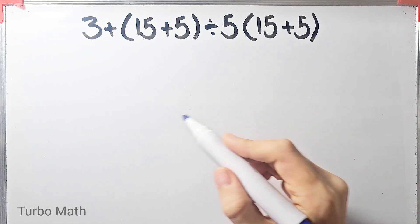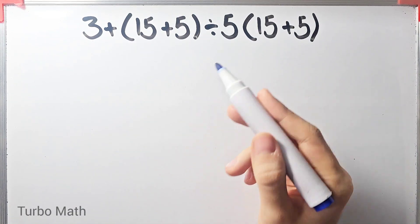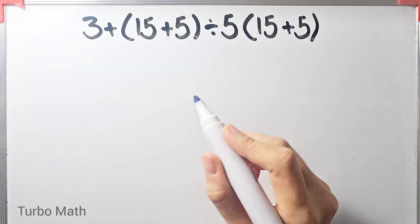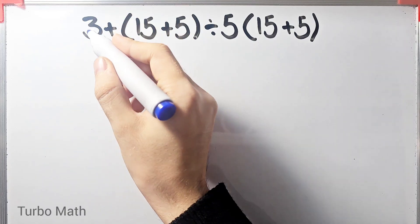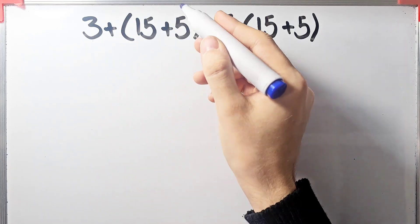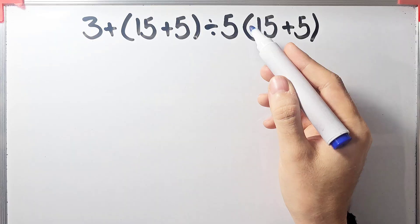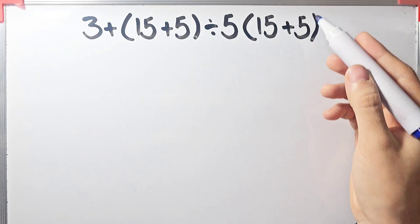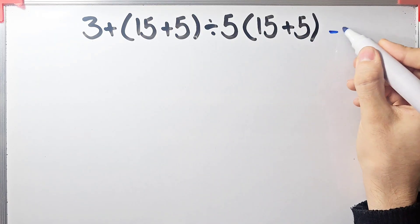Hi friends, welcome to Turbo Math channel. Many people when they see this question don't know which operation to do first, so they might get it wrong. 3 plus open parenthesis 15 plus 5 closed parenthesis divided by 5, then times open parenthesis 15 plus 5 closed parenthesis.